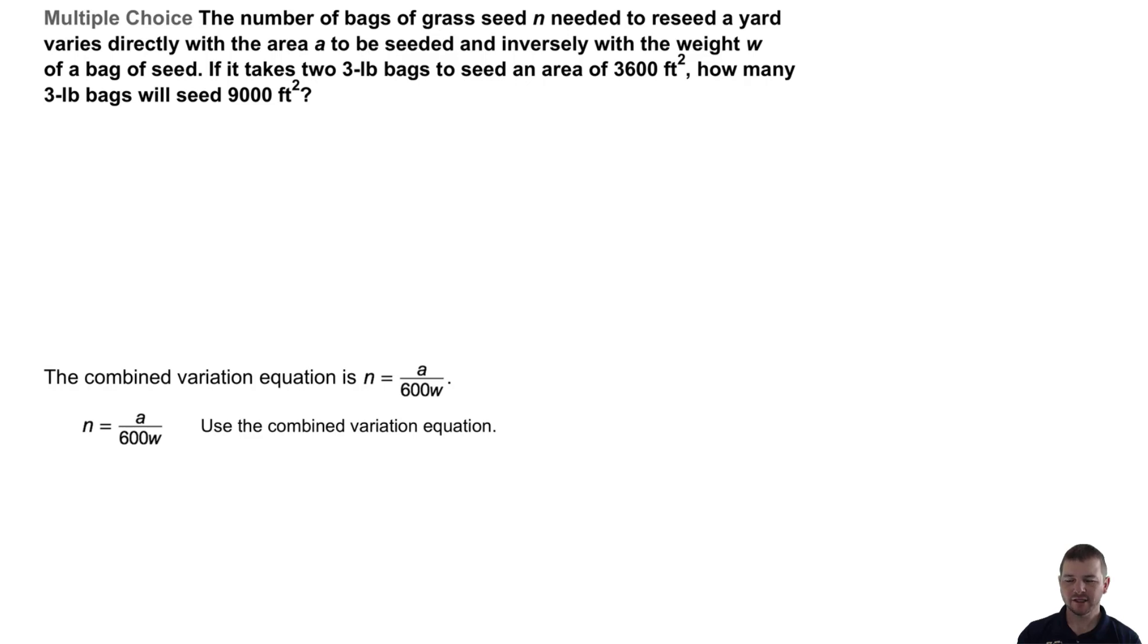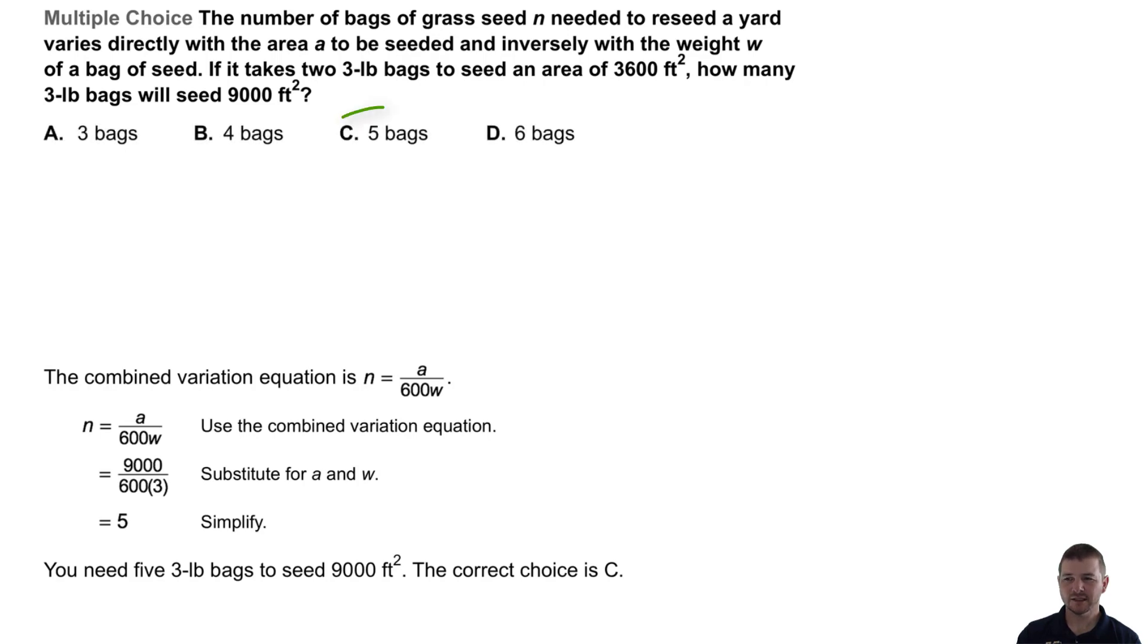We'll use that combined variation equation, n equals a over 600w, and we'll substitute for a and for w, a being 9,000 and w, 3. We'll simplify this and find that it equals 5. And so we state our final answer. You need five 3-pound bags to seed 9,000 square feet. The correct choice is C.